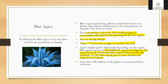When we talk about tequila, we obviously need to focus on blue agave. By Mexican law, blue agave is the only plant utilized for production of tequila. Blue agave grows long, fibrous, lanceolate leaves of a bluish color — the usable part in the manufacture of tequila is the heart, or piña. The red volcanic soil in the surrounding regions is particularly well-suited to growing blue agave, which is part of the lily family. It typically takes seven to nine years for an agave to mature, though some argue it should be 12 to 15 years, but demand has changed that.